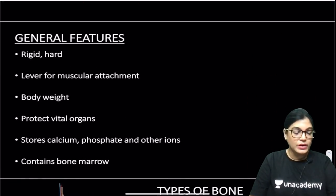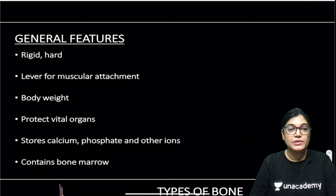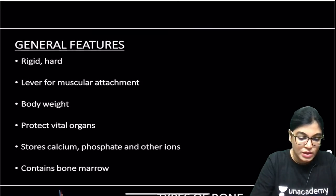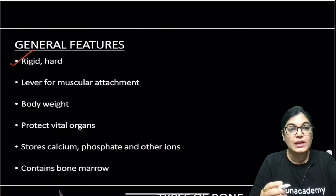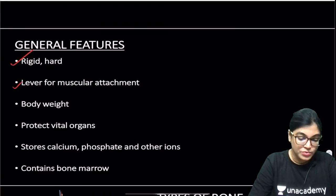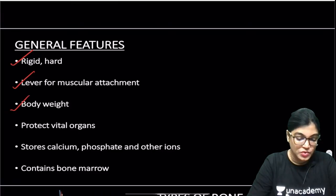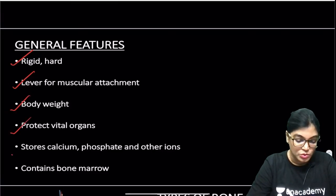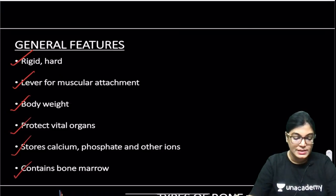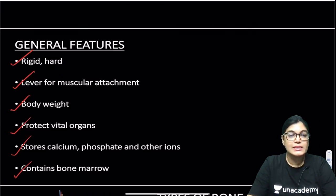The general features of the bone are that bone is rigid and hard. It acts as a lever for muscular attachment, is required for body weight support, protects vital organs, stores calcium phosphate and other ions, and also contains bone marrow.